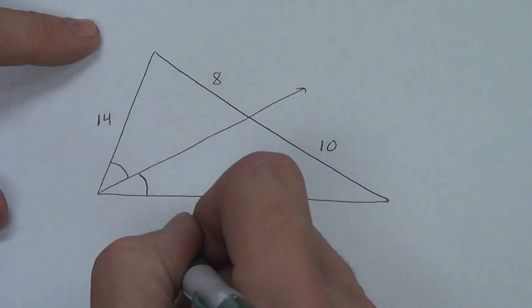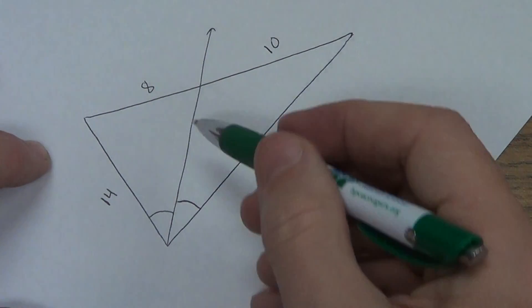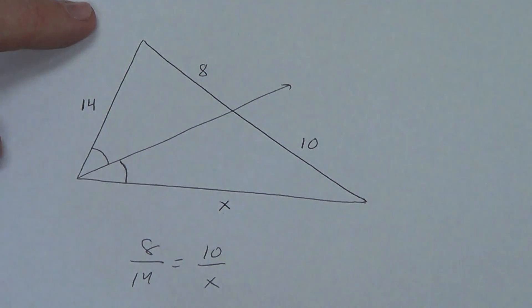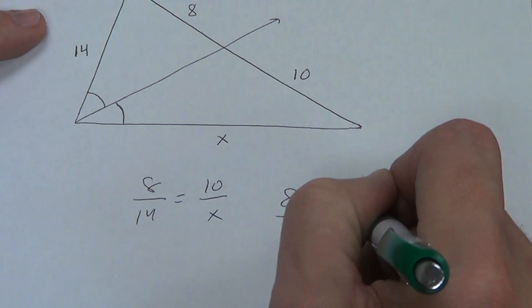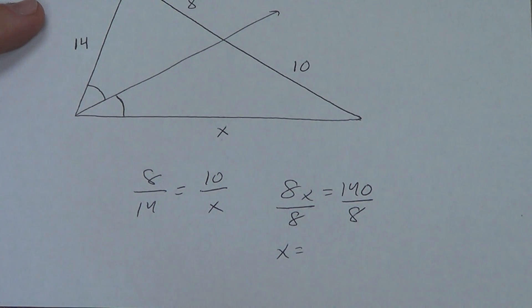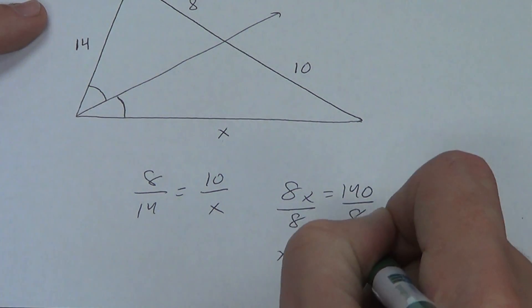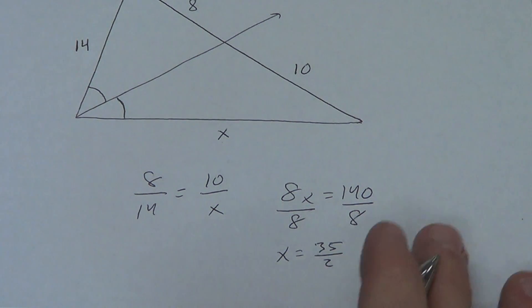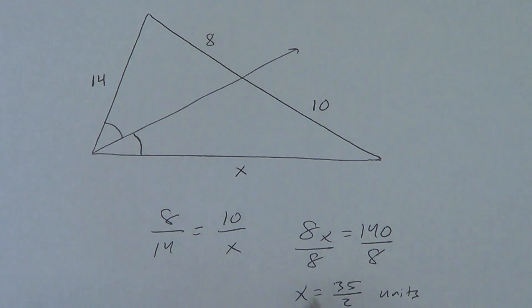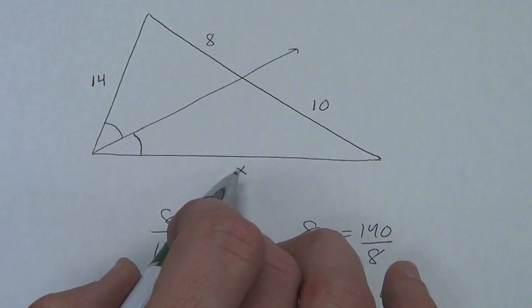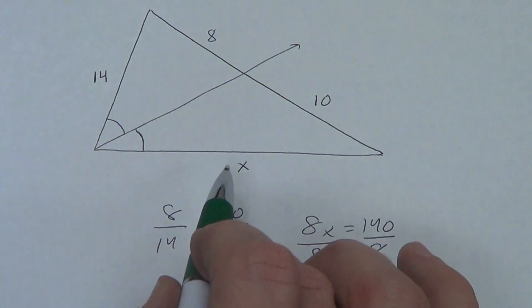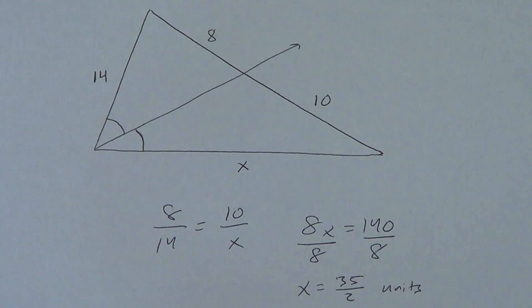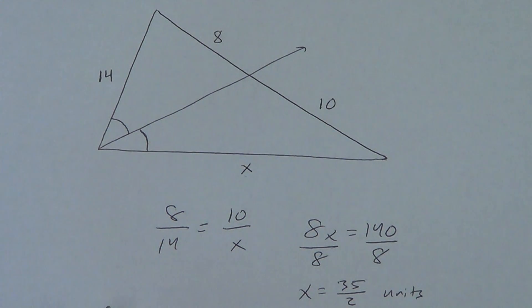Either one's going to work. I'm going to go with this way: 8 over 14 equals 10 over x. So I'm going to cross multiply. 8x equals 140. I'm going to divide by 8. So x equals... that doesn't divide evenly, so I'm going to reduce it all the way down. I'm going to divide them both by 4: 35 over 2 units. Now if I want to go to a decimal, let's see if it makes sense. It's about 17 and a half. 8 got a little bit bigger to get to the 10, so 14's got to get a little bit bigger. 17 and a half makes sense.